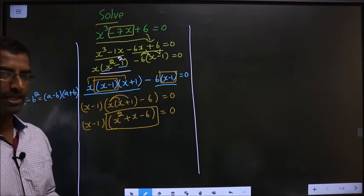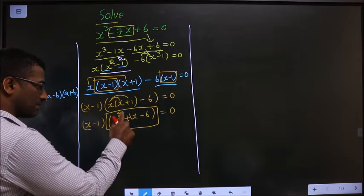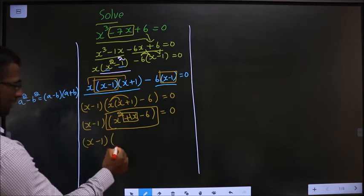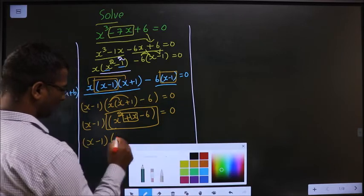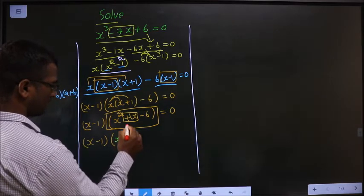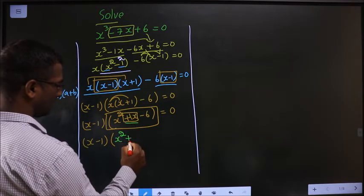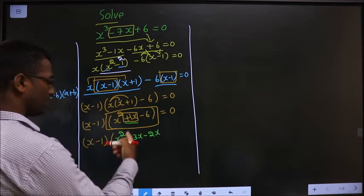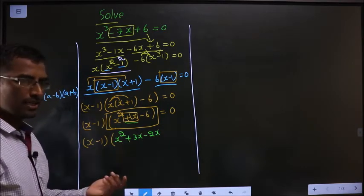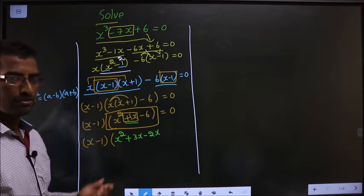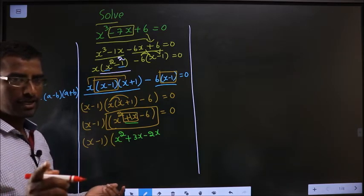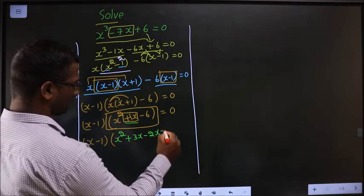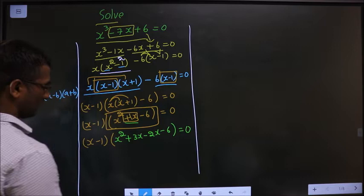And how do we factorize? Again I change the x term only. In place of plus 1x now I will be writing plus 3x minus 2x. I am not teaching factorization, I am writing directly. If you want to learn factorization, see factorization playlist. Next, minus 6 equal to 0.